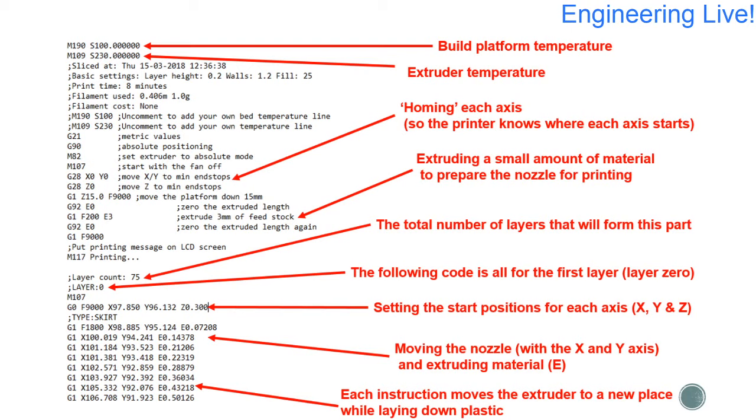Below that then we've got homing each axis. That just moves each axis to the coordinate zero zero zero and that's so the printer knows where it's starting from. Then the extruder is going to push out a small amount of plastic. That's just to clear out the nozzle, remove any old material and get fresh PLA ready to extrude. We can also see that for this particular piece of g-code there are 75 layers that could complete the whole part and it starts off by initializing that position so it sets the starting point for x y and z because you don't always want to start your print right in the corner of the 3d printer.